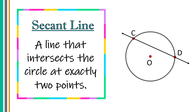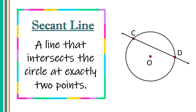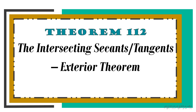As you can see, we have line CD. It intersects circle O at exactly two points, which are point C and point D. Now we have Theorem 112, called the Intersecting Secants or Tangent Exterior Theorem.